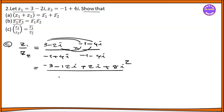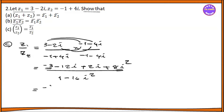It is minus 1, the whole square, so it is plus 1. And 4, the whole square, so it is 16, so it is 5 squared. So it equals minus 3, plus 8i squared. This is 8i squared, so it becomes minus 8. So minus 11.